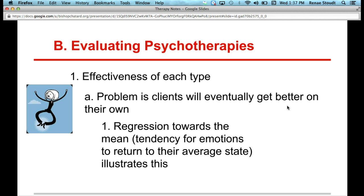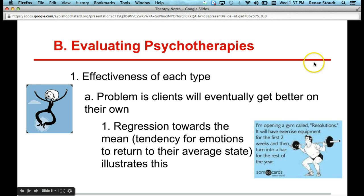Another example of this would be New Year's resolutions. Every year, New Year's resolutions come up — the most popular resolution is to lose weight or exercise more. I found this cartoon: 'I'm opening a gym called Resolutions, and we'll have exercise equipment for the first two weeks and then turn into a bar for the rest of the year.' This is a great example of regression towards the mean, because that's what people do — they get really aggressive about their resolution in the first couple of weeks, and then they regress back to their normal tendencies. That's regression towards the mean.